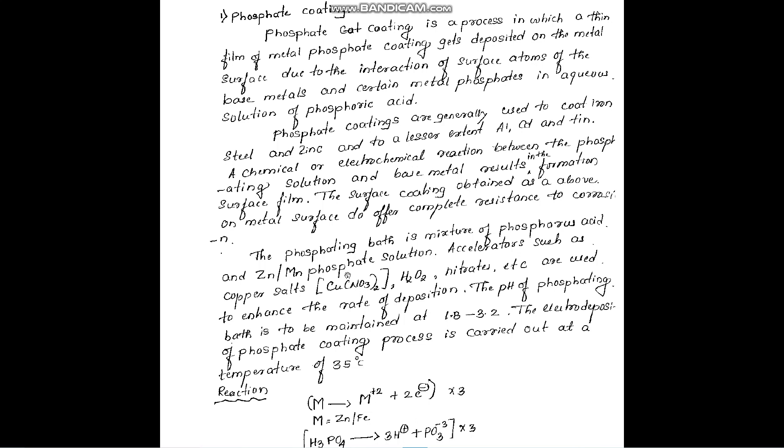The phosphate coating is done by using a phosphate ink bath which is a mixture of phosphoric acid and zinc and manganese phosphate solution. And in order to accelerate the reaction, copper salts such as copper nitrate are used to enhance the rate of deposition.